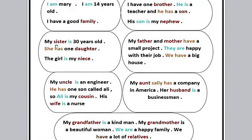My sister is thirty years old. My sister اسم مفرد، فجبنا is بمعنى يكون. She has one daughter - هي عندها بنت واحدة. استخدمنا has مش have علشان السابجكت she. Daughter يعني بنت. بنت أختي، the daughter, is my niece. يبقى niece معناها بنت الأخت.